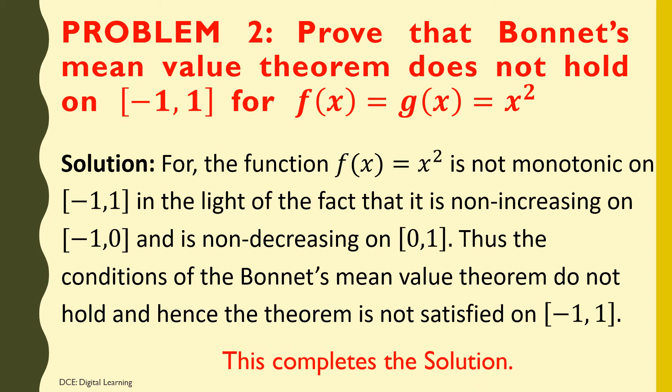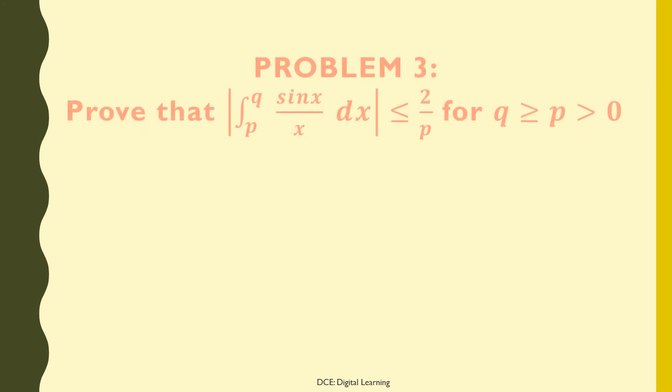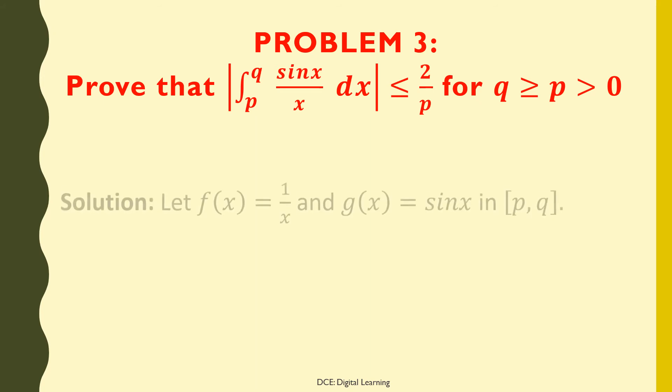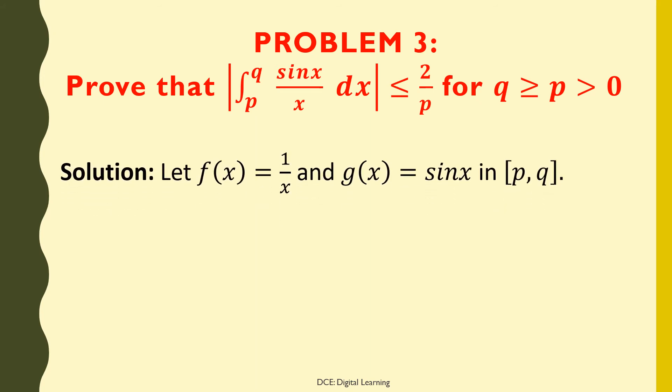Problem 3: Prove that |∫sin(x)/x dx from p to q| ≤ 2/p, for q ≥ p > 0. Solution: Let f(x) = 1/x and g(x) = sin(x) on the closed interval [p, q].